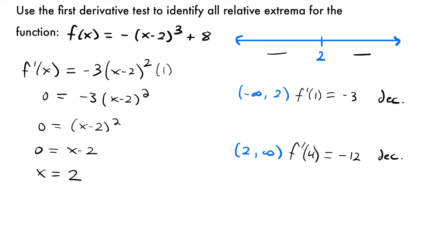On both sides of our critical value of 2, the slope is negative and the function is decreasing. So x equals 2 is not a relative min or max because the sign of the slope does not change around it. The answer to this problem is that there are no relative extrema.